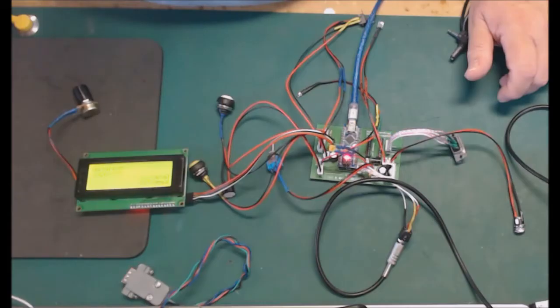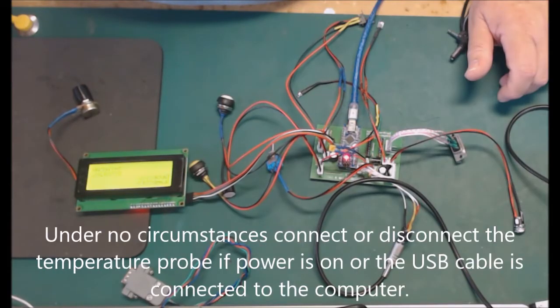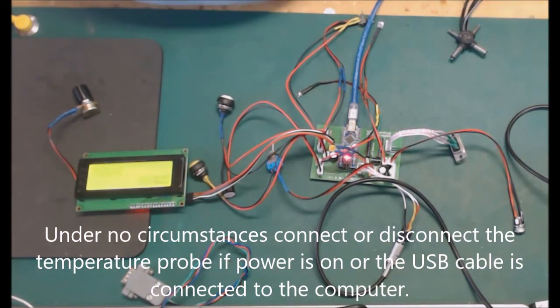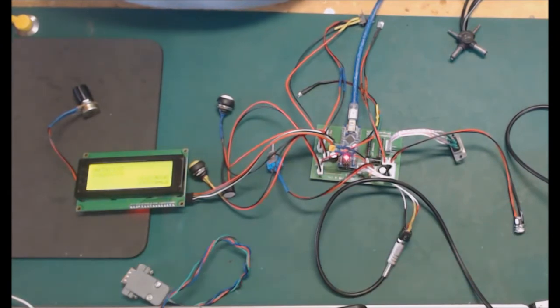So I'm using the program called DS18B20probe underscore test. The line which read hash include left angle bracket dallastemperature.h, I've changed to mydallastemperature.h. I've compiled that, uploaded it to the board, open up the serial monitor, set to 9600 baud. It tells me it's 24 degrees.